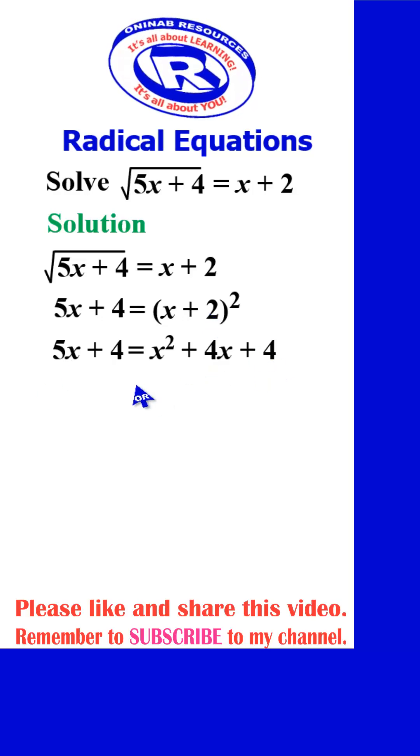We collect the like terms. We have 4 minus 4 is equal to x squared plus 4x minus 5x. This is going to give us 0, forming a quadratic equation. So we now have x squared minus x is equal to 0.